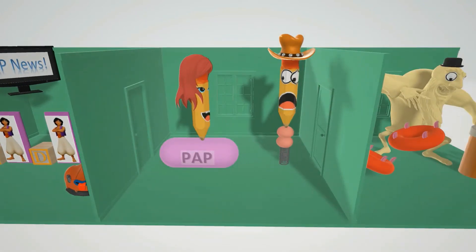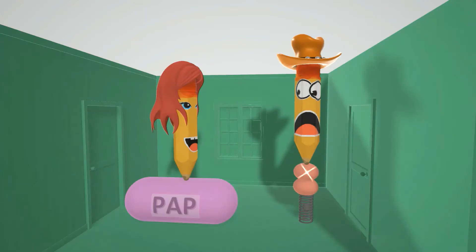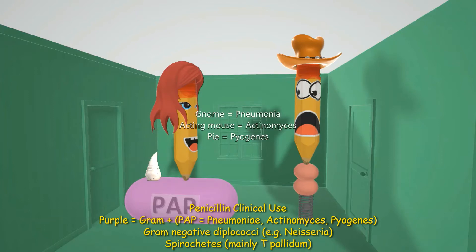The couple is waiting for the marriage therapist, each sitting on interesting cushions. She's sitting on a purple cushion — purple for gram positive. This reminds us of the gram positive organisms penicillin is used for: pneumonia, actinomyces, and pyogenes — specifically strep pneumonia, strep pyogenes, and actinomyces.